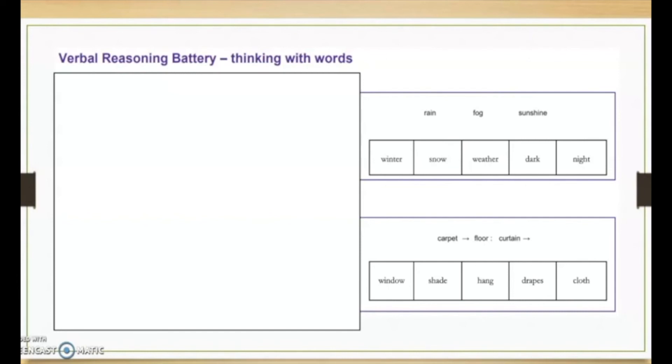So we know the answer is snow. And then for the second example, we have this a little bit different. It's the relationship between the words. So carpet is to floor, as curtain is to what? Window, shade, hang, drapes, or cloth. And as we know, a carpet covers a floor, and then a curtain will cover a window.